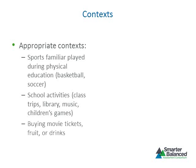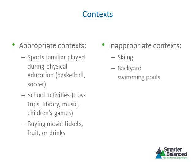Activities that involve nominal exchange of money, such as buying tickets for a movie, buying fruit or other types of snacks, or purchasing drinks, are also appropriate. Some examples of inappropriate contexts for high school include skiing, since it is an expensive sport and has geographic bias; swimming pools and backyards due to socioeconomic biases; and paying a mortgage or using retirement funds, since these activities have not been experienced yet by high school students.